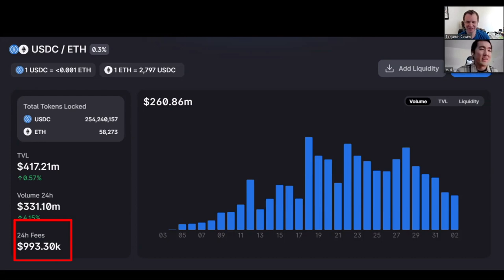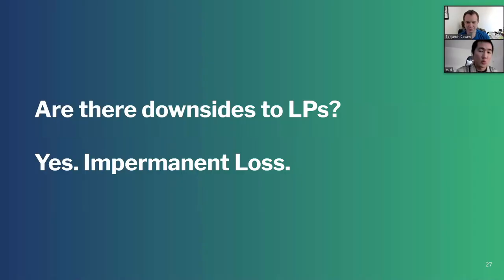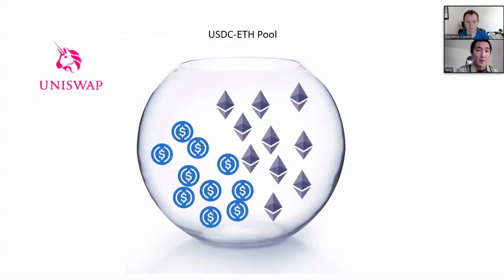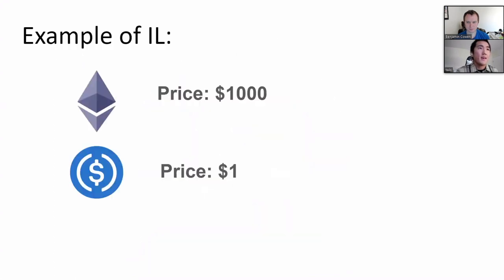You might be asking: what is the downside to providing liquidity? It seems like free money, right? But there is one major downside called impermanent loss. The definition of impermanent loss is the opportunity cost of providing liquidity relative to just holding the two assets. It's a confusing definition, so let's go over an example.